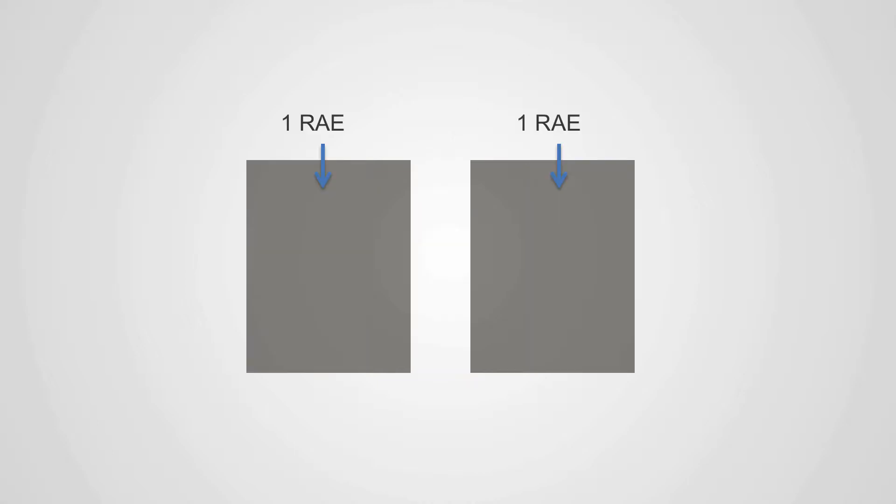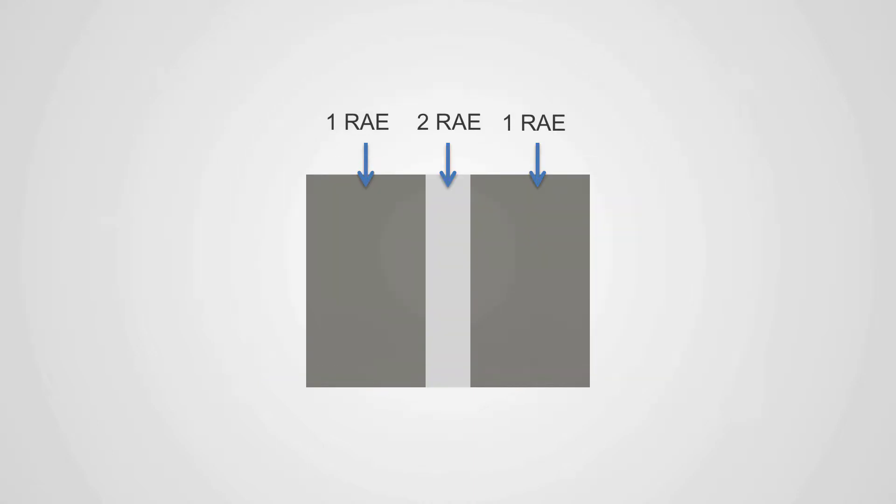If we have two similar rectangles, we see them as separate because of the white between them. If we overlap the two rectangles, the resulting image becomes more complex.